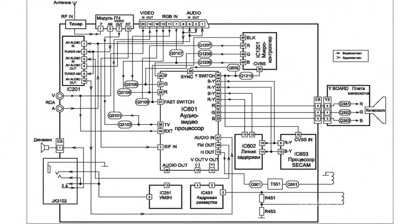The control unit processor in a TV set forms tuning voltage for the voltage synthesized selectors. For this matter, a high stable voltage source of plus 30 volts is used.